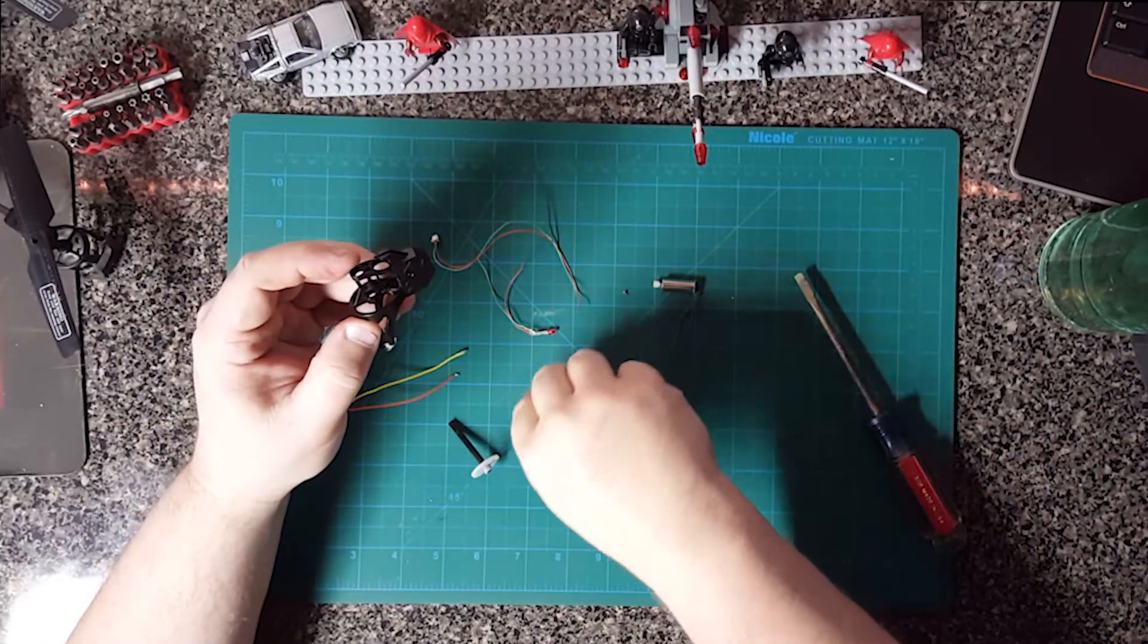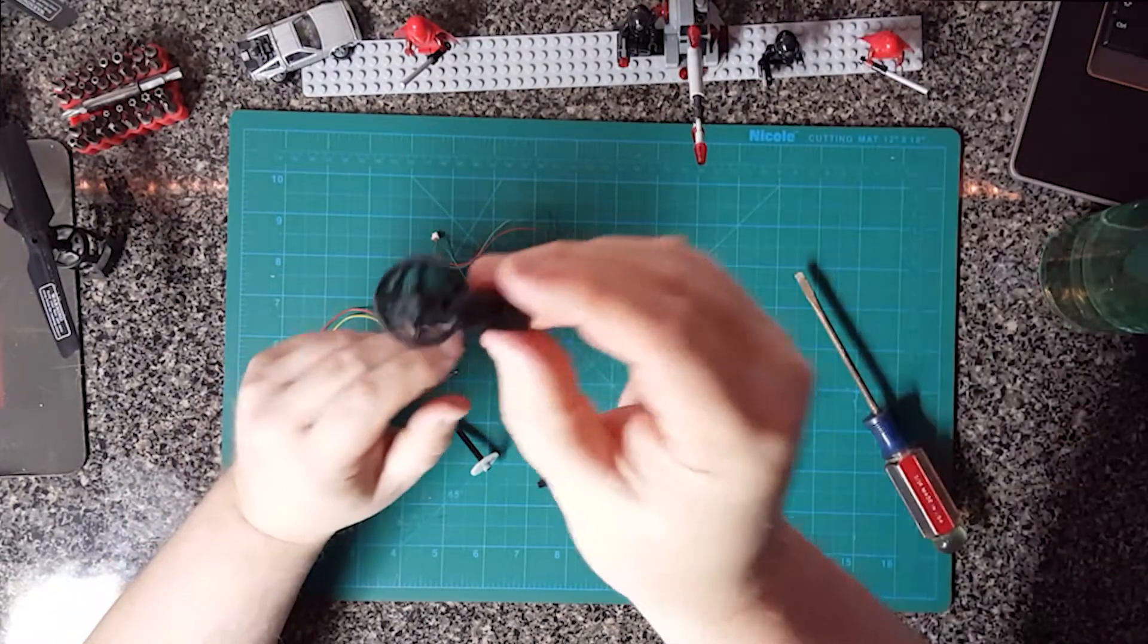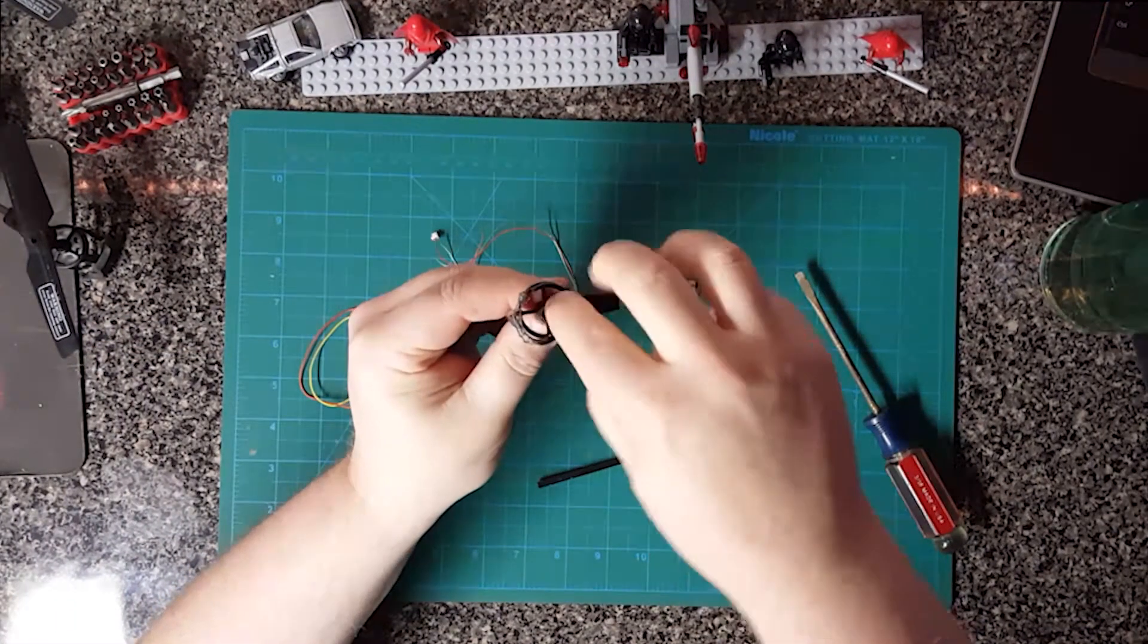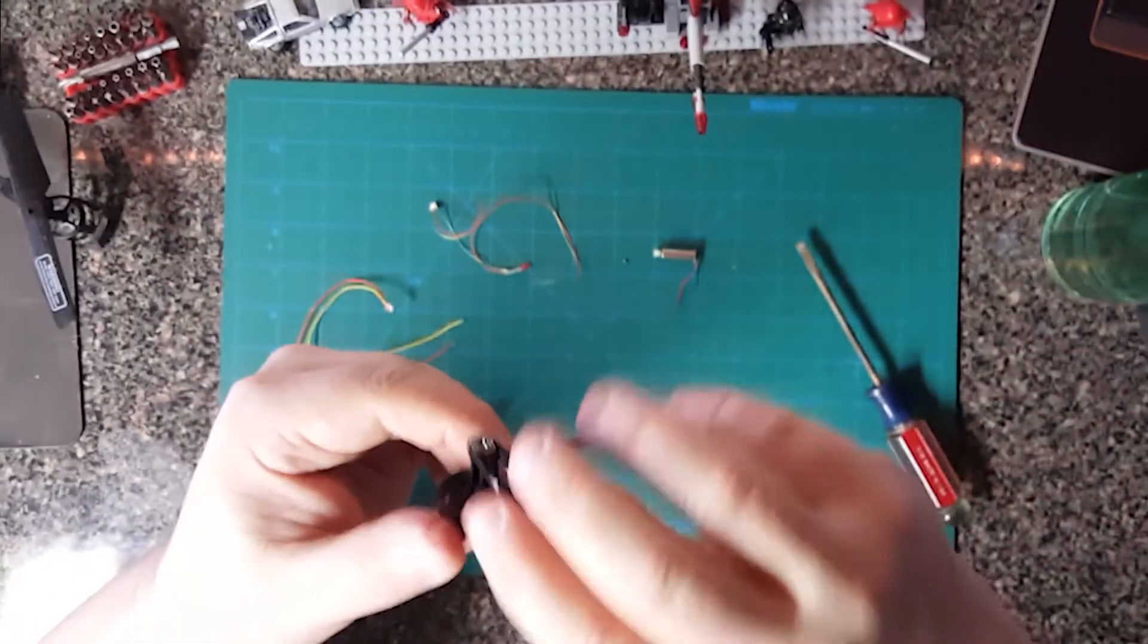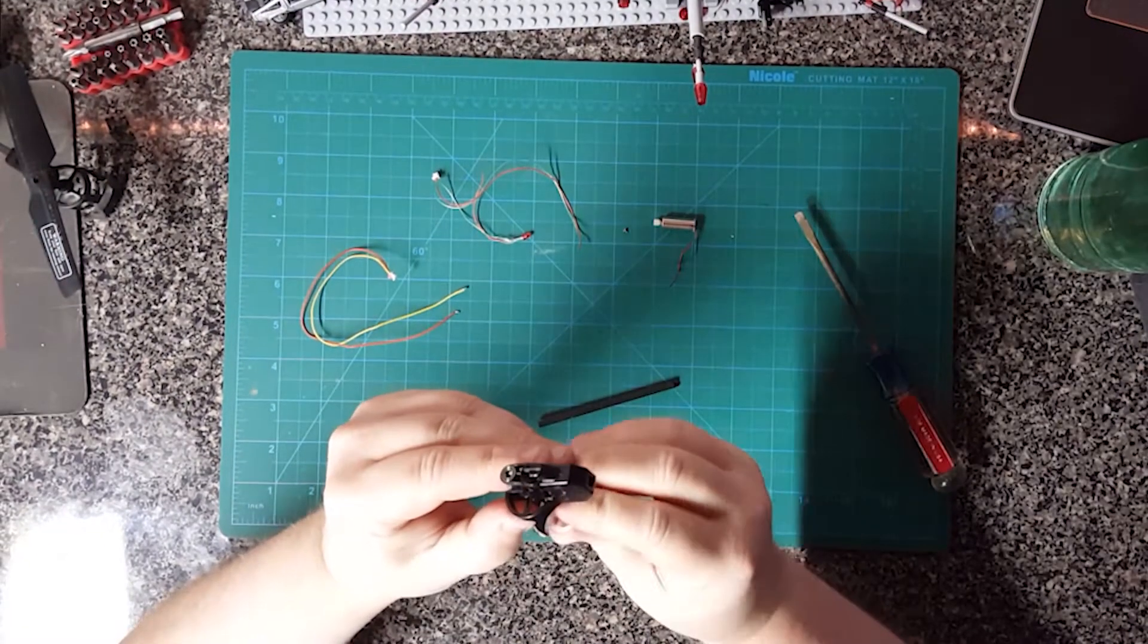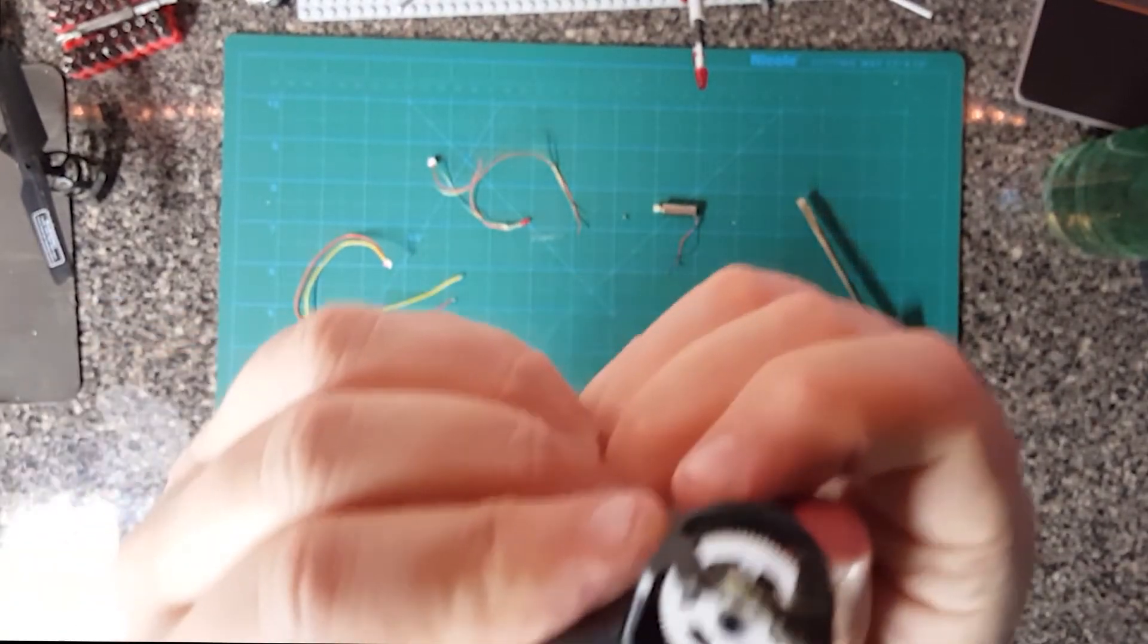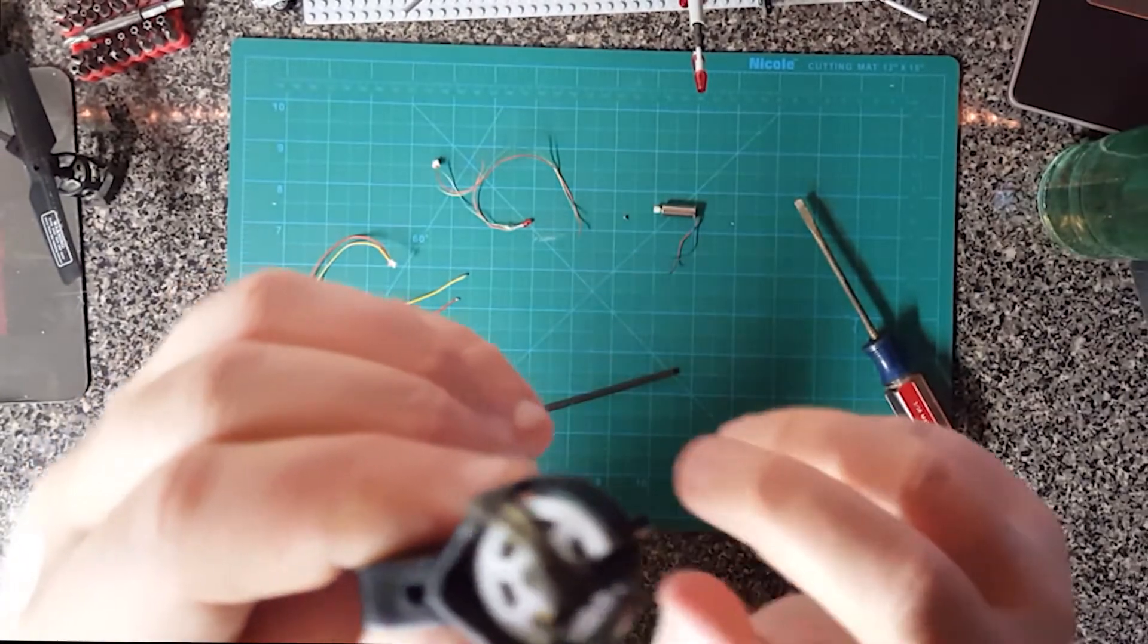So this shaft goes up through this housing and the prop connects on top here. But you also have these two small bearings. They're very small. And then one goes on top like that and then one goes on the bottom. Just press it in with my hand. And then the shaft goes through that. The top one wants to pop off when you slide it up. So now you want to make sure that that spins freely. See how it's spinning nice. No binding there whatsoever.